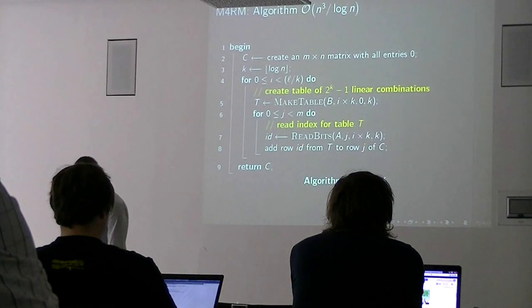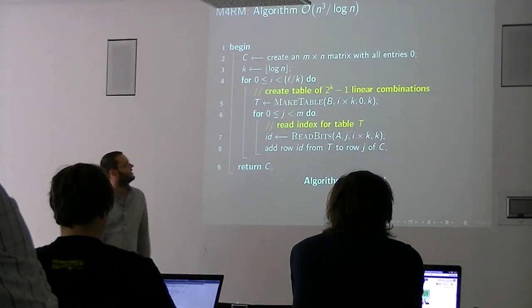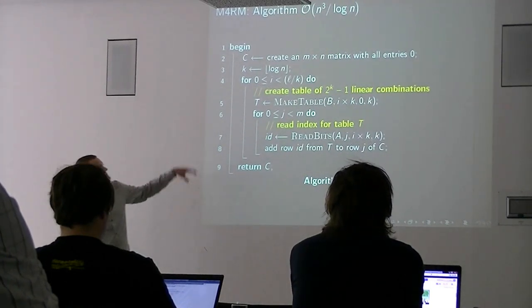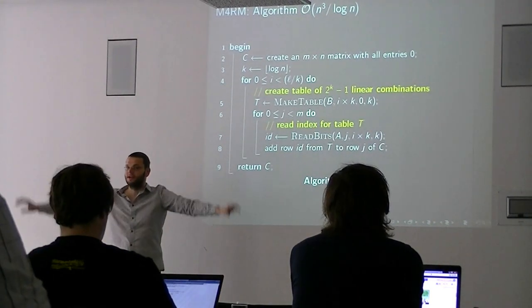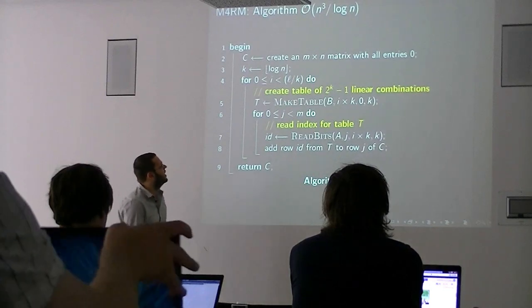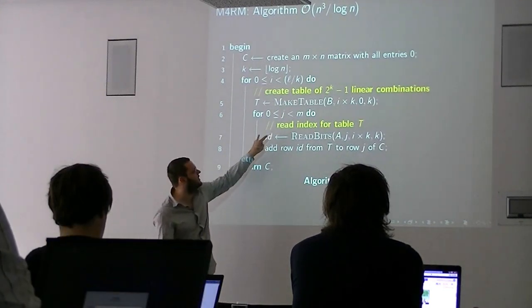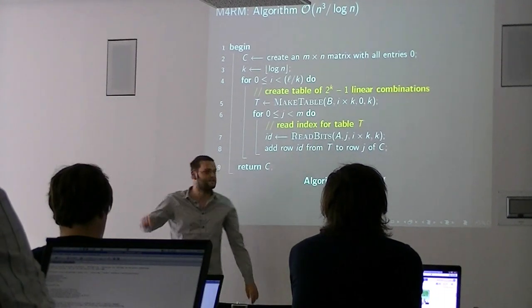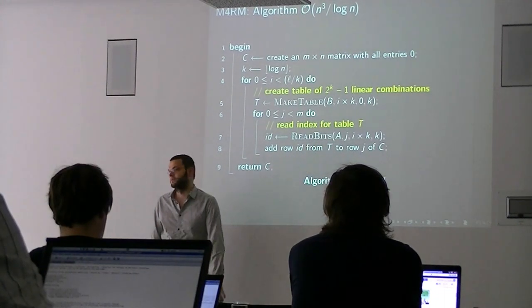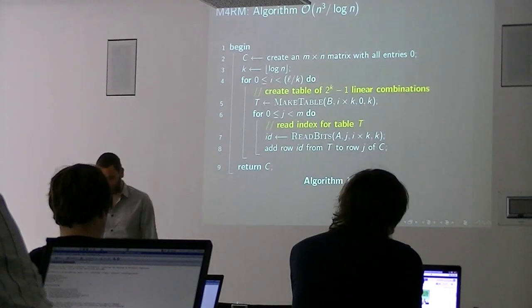So the algorithm looks very simple. We run through our stripes, we create all possible linear combinations of these rows, and then we read the index from the table by using A as lookup, and then we add that row of the table to our vector C, and we're done.